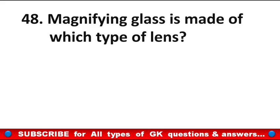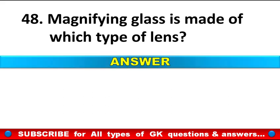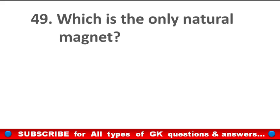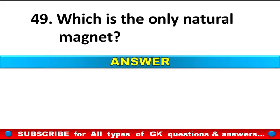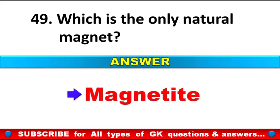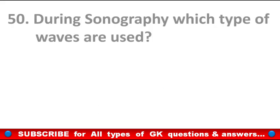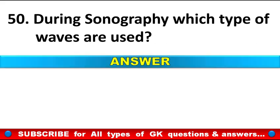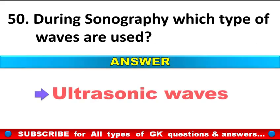Magnifying glass is made of which type of lens? Answer: Convex lens. Which is the only natural magnet? Answer: Magnetite. During sonography, which type of waves are used? Answer: Ultrasonic waves.